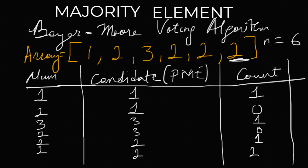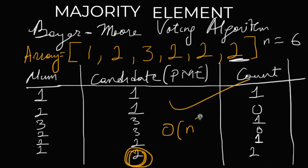So let's go back to the original example. When the last elements were 2, our candidate becomes 2, we increment count to 1 on the first 2, then to 2 on the final 2, and we return 2 — the majority element, which is correct. The time complexity is O(n) since we only iterate through the array once, and the space complexity is O(1) since we're doing everything in place.